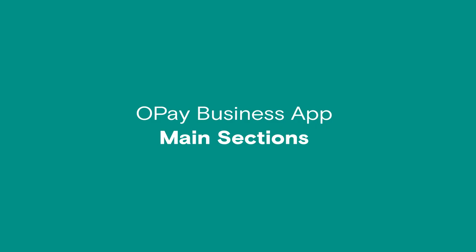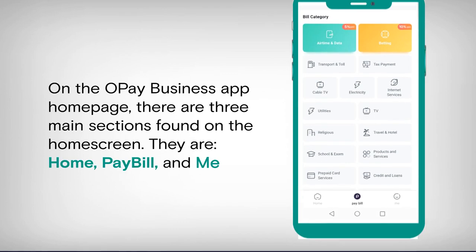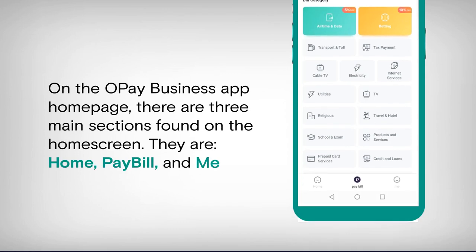The main sections of the Opay business app. On the Opay business app, there are three main sections on the home page found on the home screen. They are Home, Pay Bill, and Me.